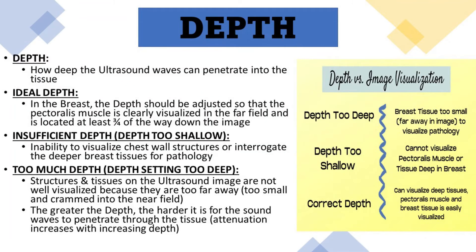The next ultrasound control that I adjust is depth. Depth is how deeply the ultrasound waves can penetrate into the tissue. Ideally in the breast, the depth should be adjusted so that the pectoralis muscle is clearly visualized in the far field and is located at least three quarters of the way down the image.